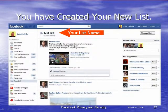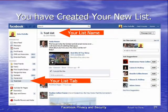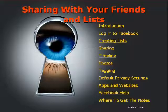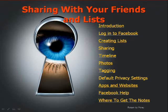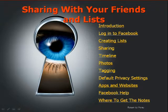Having done all that, we click 'Create', which creates our list. This is our new list — the list has a name and a tab, and that's the list created. It's just as simple as that. The next video will be about sharing with your friends and lists, so in the interest of keeping this video short, we'll stop right there and go on to the next one shortly.